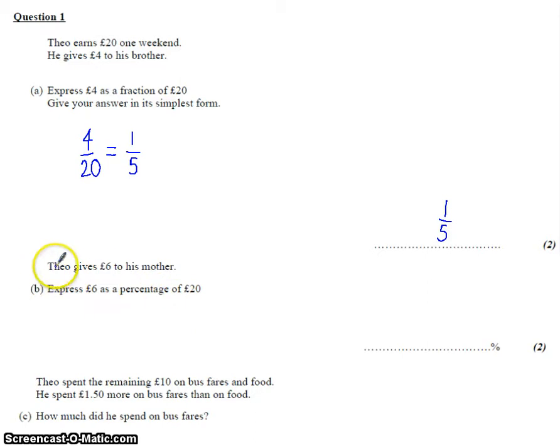Part B. It says here Theo gives £6 to his mother. Express £6 as a percentage of 20. The key point here is the percentage bit.